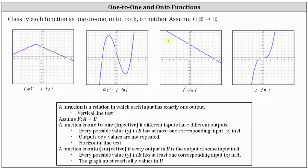Now let's talk about onto functions. An easy way to determine whether a function is onto or surjective is to determine whether the graph reaches all the y values in B — which in our case, B is all real numbers. So if our graph does not hit all the y values on the y-axis, it is not onto.